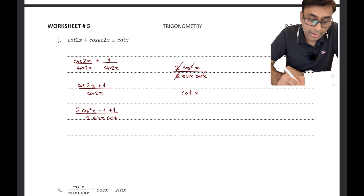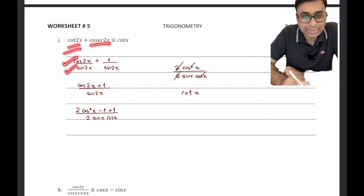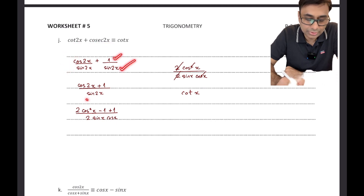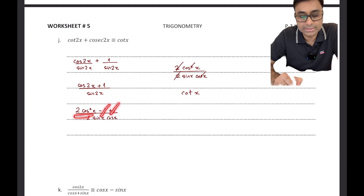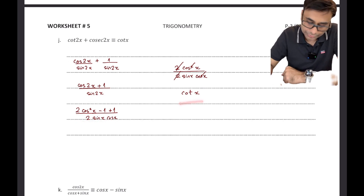Another example: cot 2x + cosec 2x. Cot 2x = cos 2x/sin 2x, sticking to sin and cos. Cosec 2x = 1/sin 2x. I take the LCM and apply the formula. I use cos 2x = 2cos²x - 1 because I can see the 1s cancelling. Sin 2x becomes 2 sin x cos x, and after simplifying you get exactly what you had to prove.